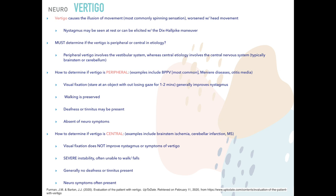With central vertigo — involving the brainstem or cerebellum, with causes such as brainstem ischemia, cerebellar infarction, or multiple sclerosis — visual fixation does not improve symptoms or nystagmus. These patients have severe instability and are often completely unable to walk without falling. There is generally no deafness or tinnitus, but neurological symptoms are present. These patients should be referred to neurology or the ER.